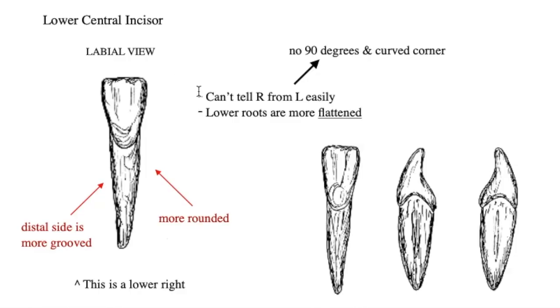Moving on to the lower central incisors. Both corners are 90 degrees, so we can't use the corner curvature to distinguish between left and right as we did with the uppers. For our exams we're not going to be tested on deciding between lower lateral and lower central, but for anyone wanting more detail: you have to look at the root — feel the side of it. If there is a more grooved side and a more rounded side, the more grooved side is distal and the more rounded is mesial.